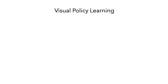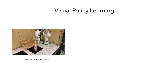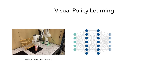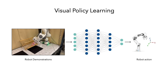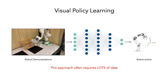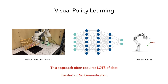Visual policy learning refers to the setting where we first collect a bunch of robot demonstrations and learn deep networks that map images from these demonstrations to robot actions. While effective, this approach often requires a lot of data. Further, it is hard to get these image-based policies to generalize.